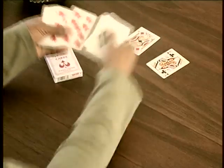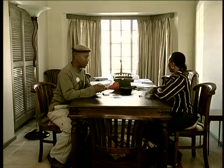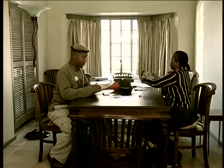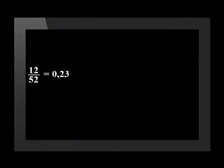Jack, queens, and jack — we've got spades, hearts, diamonds, and clubs. That's four, eight, twelve face cards. We have 52 cards in a deck. 12 divided by 52 is equal to 0.23.